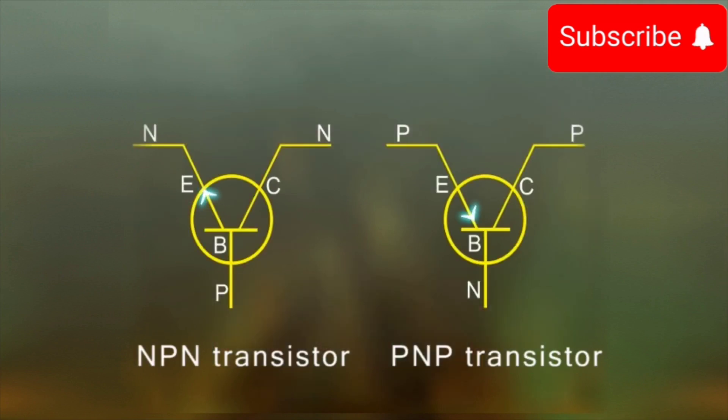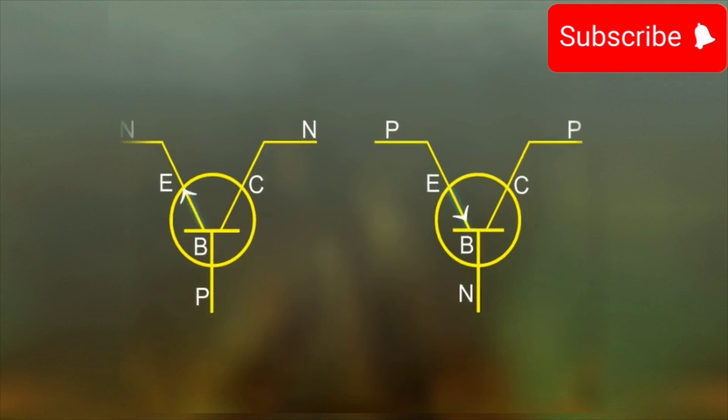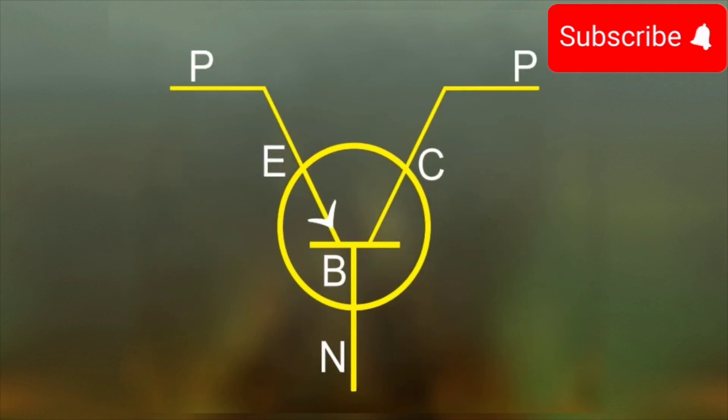The arrow on each symbol identifies the emitter terminal of the transistor. For PNP transistor, the arrow head points from P-type emitter to the N-type base.